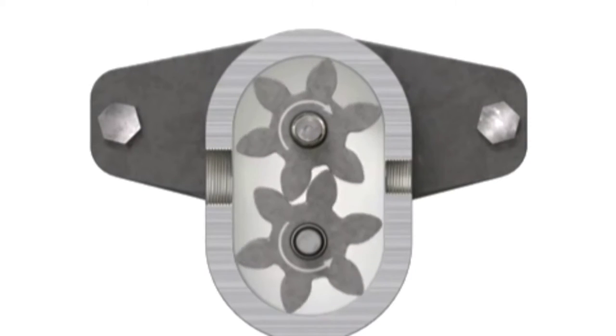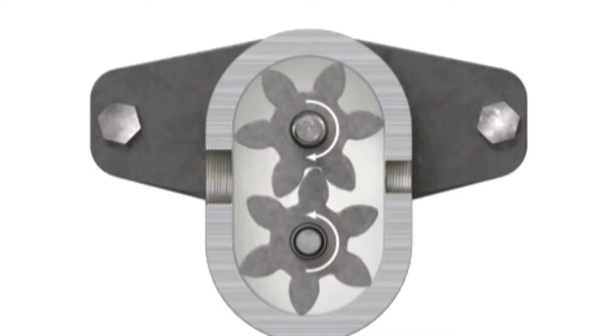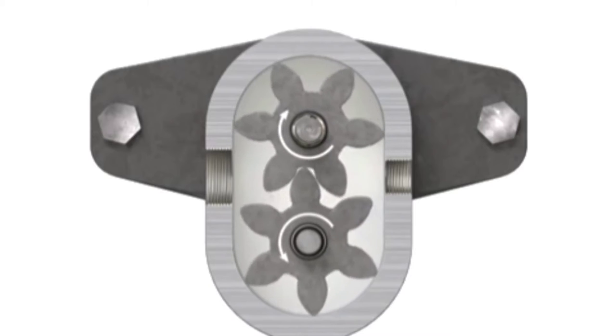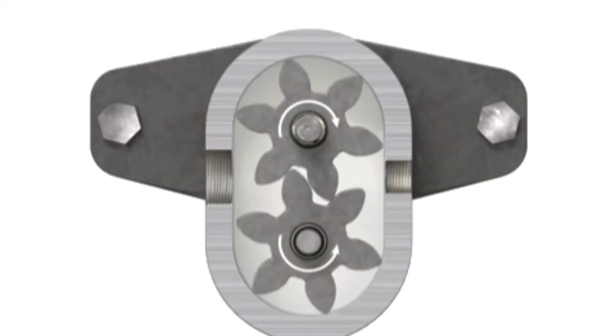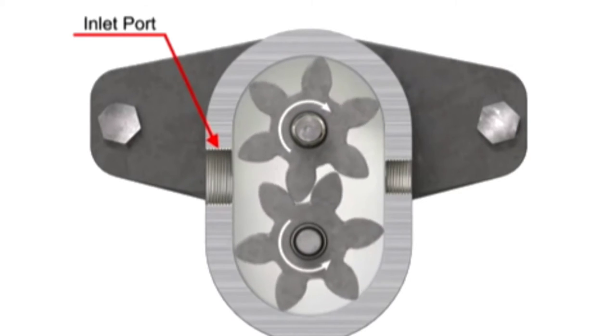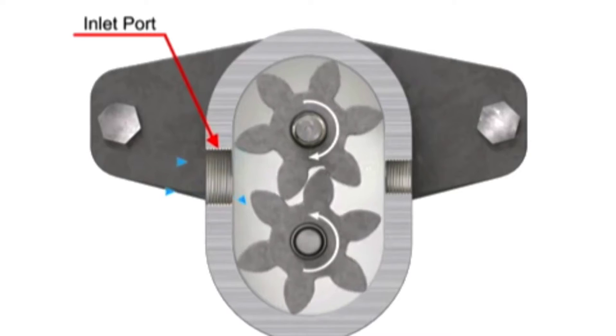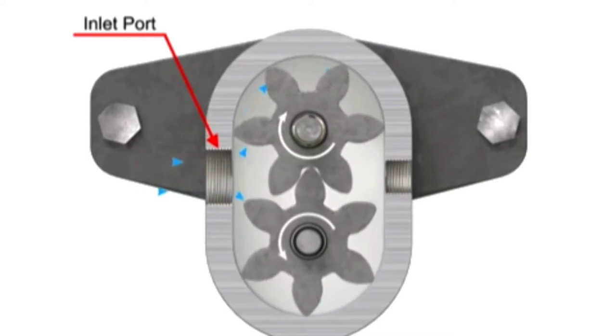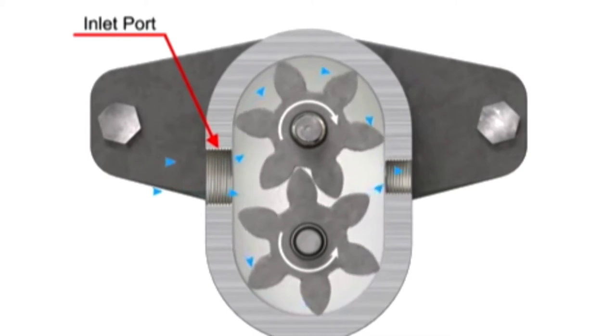As the gears rotate away from each other and come out of mesh, they create an expanding volume on the inlet side of the pump. This creates a vacuum at the inlet port allowing fluid to flow into the pump. Then fluid flows into the cavities and is trapped by the gear teeth.